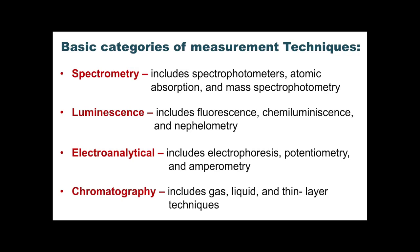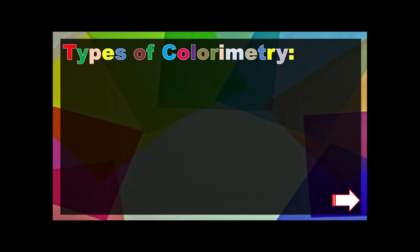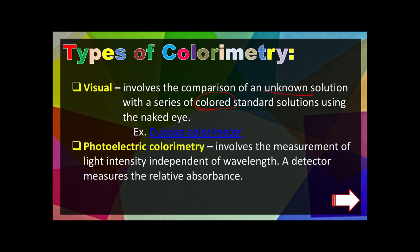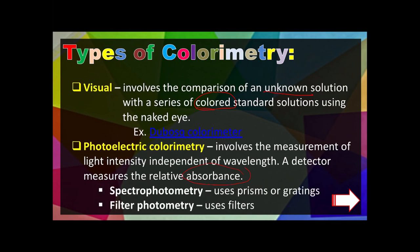Speaking of colorimetry, we have two types. First, visual colorimetry, which involves the comparison of unknown solutions with a series of colored standard solutions using only our naked eye. An example is the Duboscq colorimeter. Next, photoelectric colorimetry involves the measurement of light intensity independent of wavelength, with a detector that measures the absorbance of the analytes present in your sample. Examples include spectrophotometry that uses prisms or gratings, and filter photometry which uses filters.